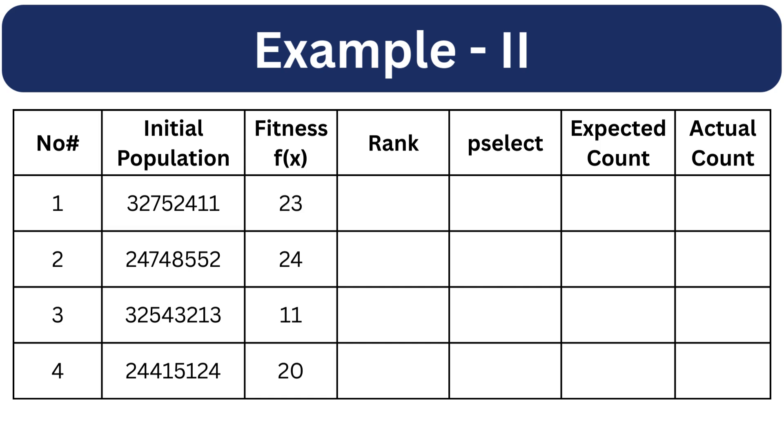So number of non-attacking pairs for the first individual is 23, second is 24, third is 11 and the last is 20.